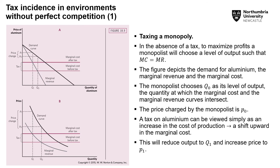What happens in the absence of perfect competition — specifically, if we tax a monopoly? The monopolist maximizes profits by producing where marginal revenue equals marginal cost, corresponding to price P₀ and quantity Q₀. If we impose a tax on aluminium production, the marginal cost curve shifts upward. The profit-maximizing price increases and the profit-maximizing quantity decreases. We see a reduction in output and an increase in the price of aluminium following the tax. The tax can be seen as an increase in production cost that is then passed on through higher prices paid by consumers.